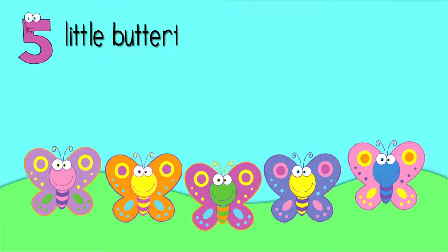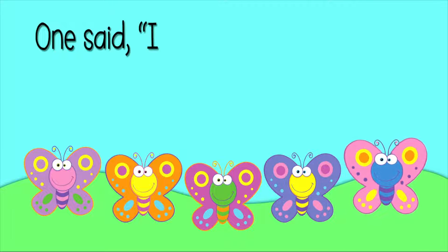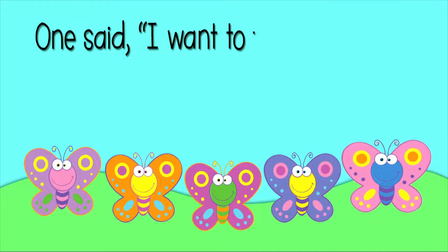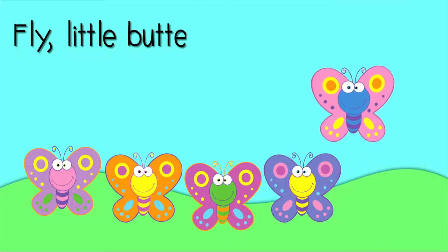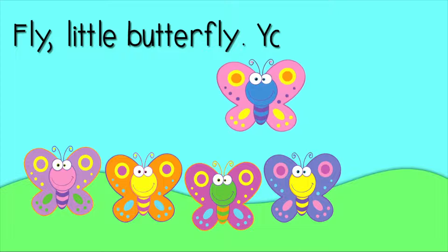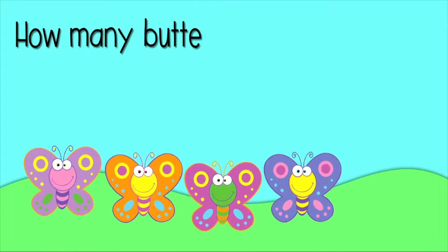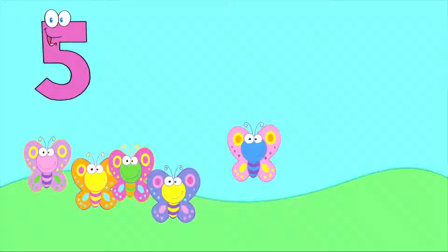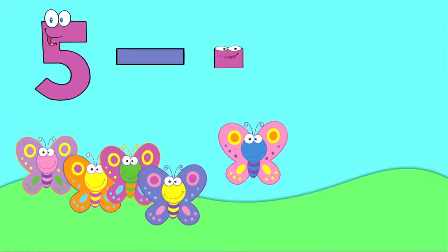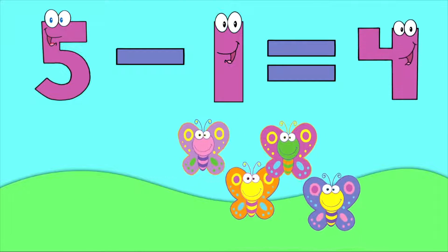Five little butterflies rested on the ground. One said, I want to fly all around. Fly, little butterfly, you know how. How many butterflies are left now? Five butterflies minus one butterfly equals four butterflies.